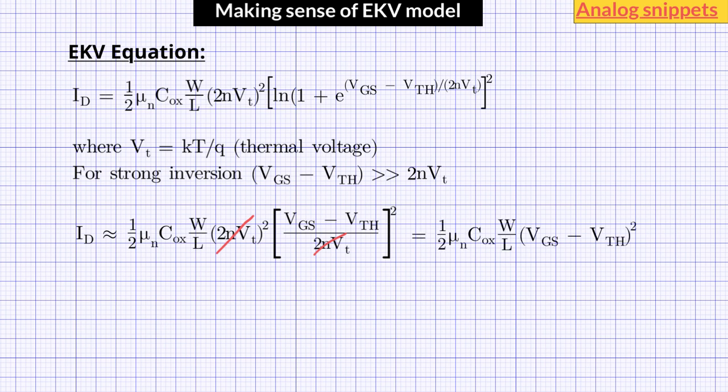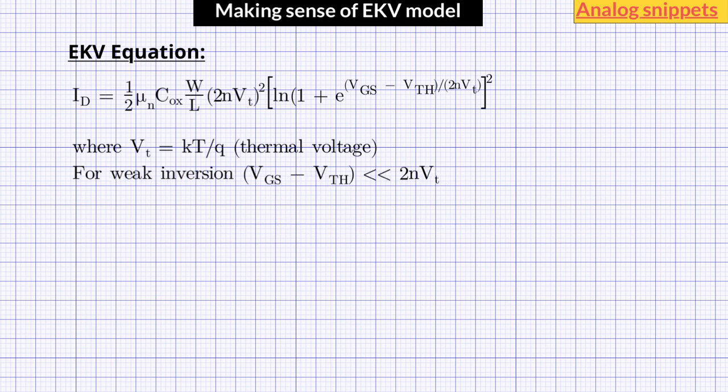Now let's consider the other extreme. In weak inversion or subthreshold, the VGS minus VTH term is usually negative and hence much smaller than 2nVT. In that case, the term inside the square bracket reduces to just the exponential term. Further, the 2n squared and 2nVT cancel out. The multiplication term is a constant for a given device, so we can replace it by a single parameter.